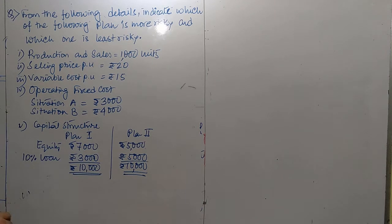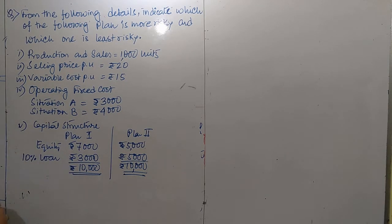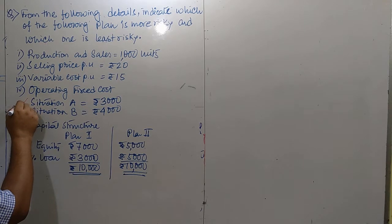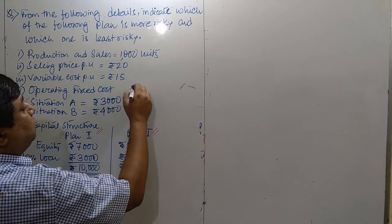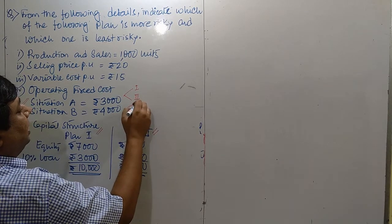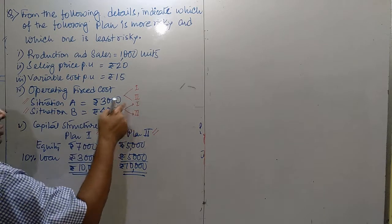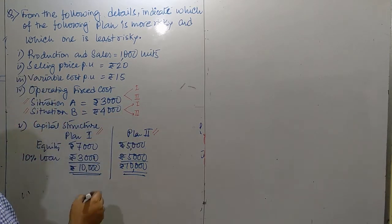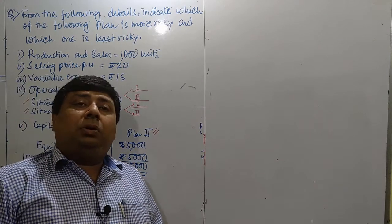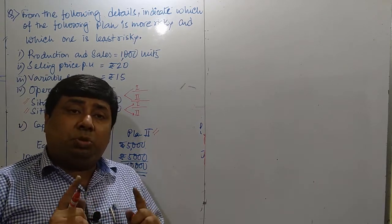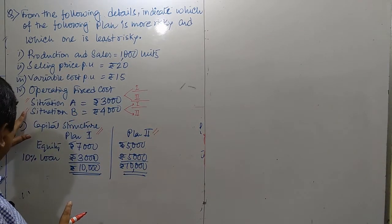Before calculations, we have to recapitulate the concepts. It is asking us to calculate more risky and less risky positions. Now, situation A and situation B each have plan 1 and plan 2, meaning each situation must have two plans. For situation A it is plan 1 and plan 2; for situation B it is again plan 1 and plan 2. Ultimately we are getting four separate combinations depending upon the given information.